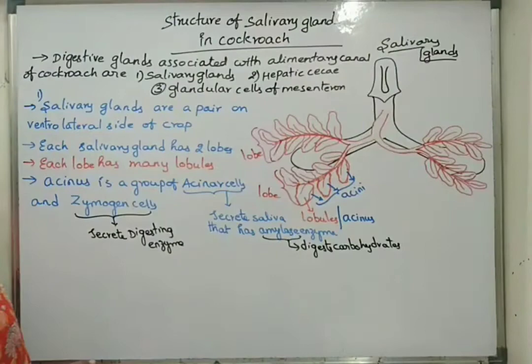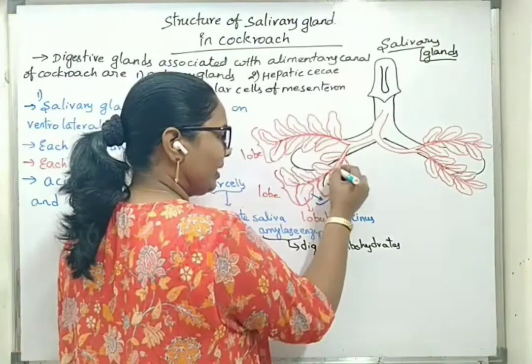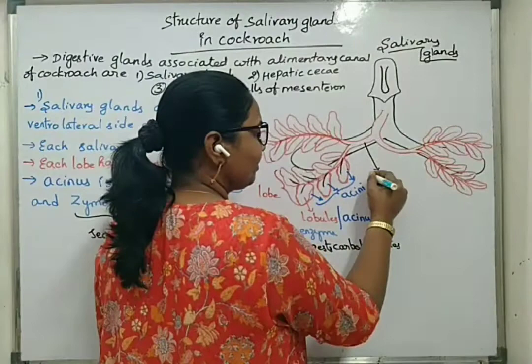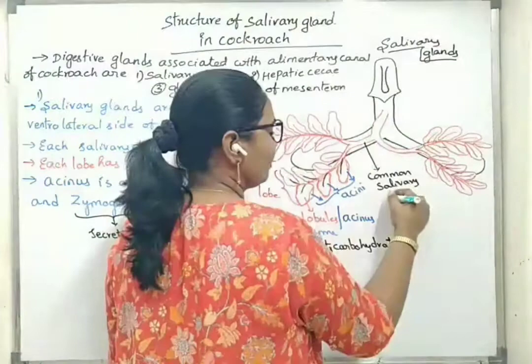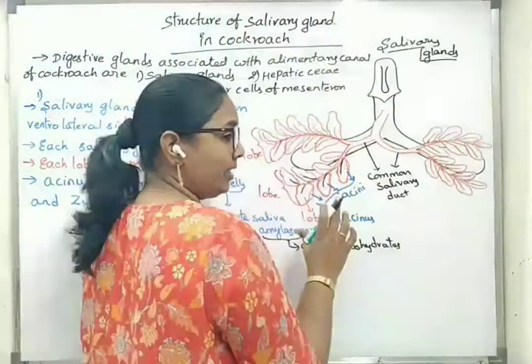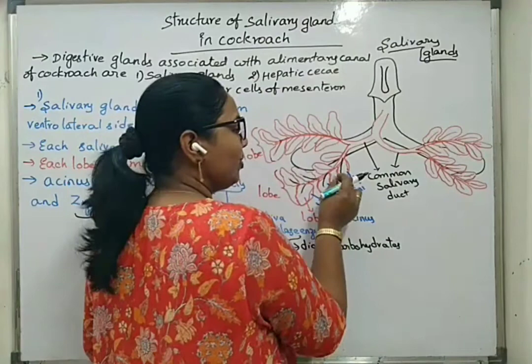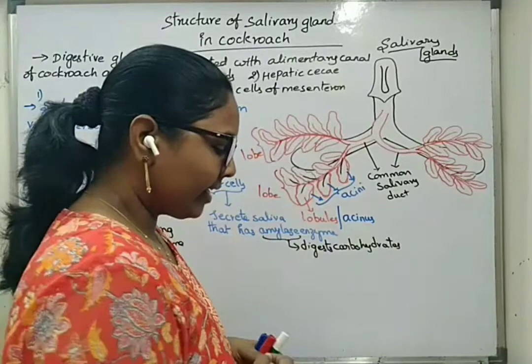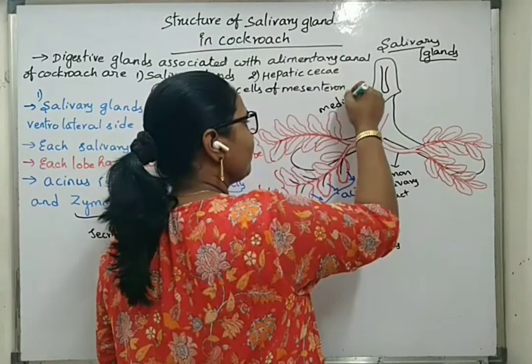Each acinus, or all the acini, have ductules. These ductules open into common salivary ducts. There are two common salivary ducts — one on each side — because the salivary glands are present on either side of the crop. These two common salivary ducts unite to form the median salivary duct.